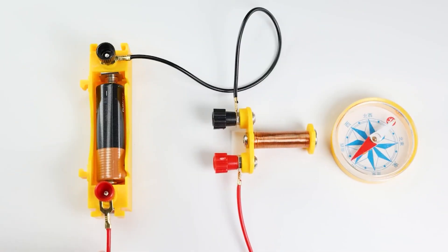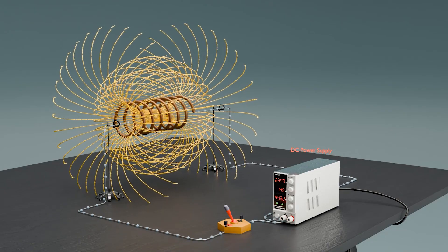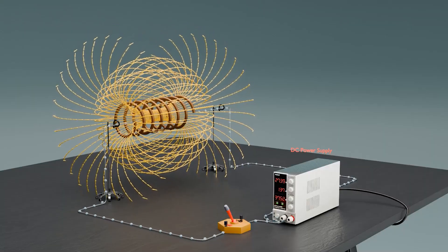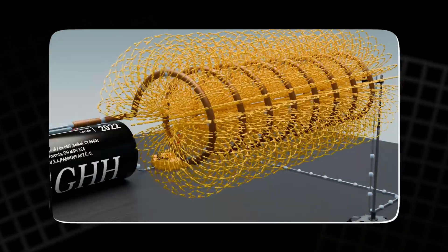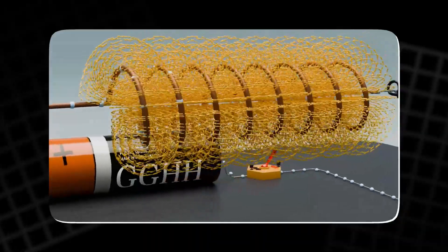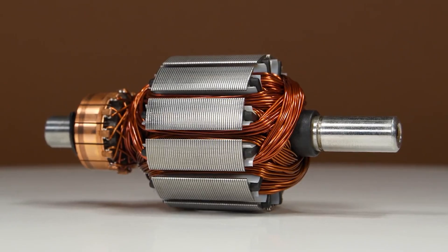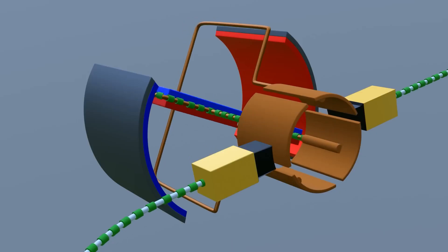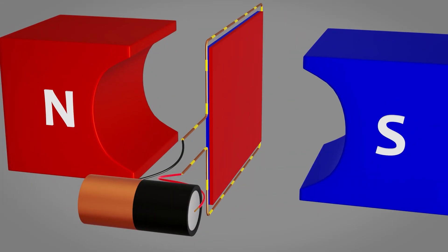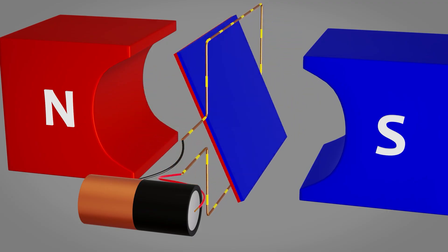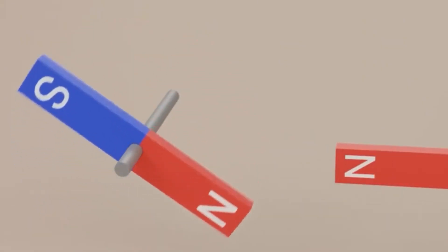But the magic happens when you flip the current, when you reverse the flow of electricity. By flipping the direction of the current, you reverse the magnetic poles. This is called polarity reversal. So now, instead of a steady magnetic field, we have a changing magnetic field that can keep pushing and pulling objects. This polarity change is crucial for motors. If we use this in a rotating system, we can create continuous motion. The electromagnet's poles switch back and forth, causing the system to spin. In fact, this is essentially the basic principle behind an electric motor.